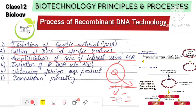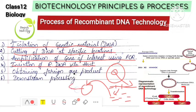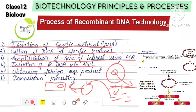After amplification, the DNA fragments are transferred to a vector. This forms recombinant DNA. The recombinant DNA is then inserted into a host cell.